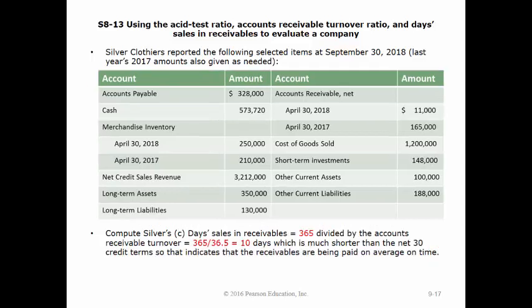The last part asks us to compute Silver Clothiers' days sales in receivables, calculated as 365 divided by the accounts receivable turnover. By dividing 365 by 36.5, we get 10 days, which is much shorter than the credit terms of net 30. This shows that we are collecting accounts receivable on average well within the credit period, which is also good.